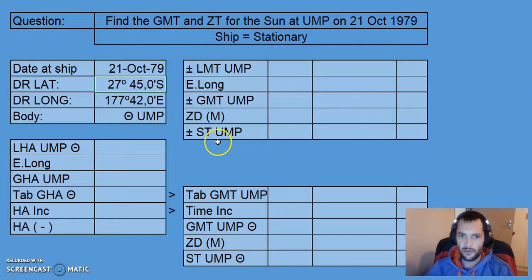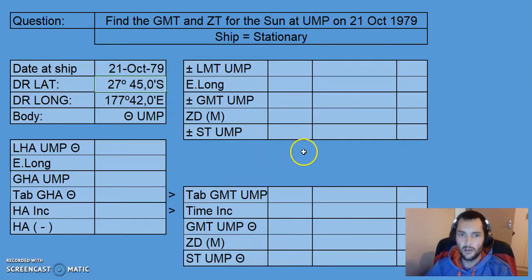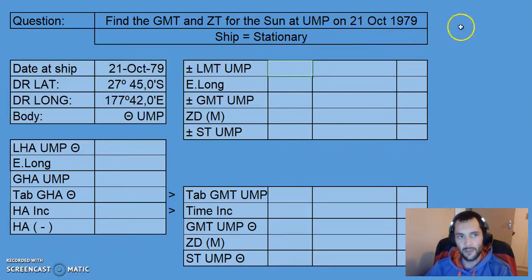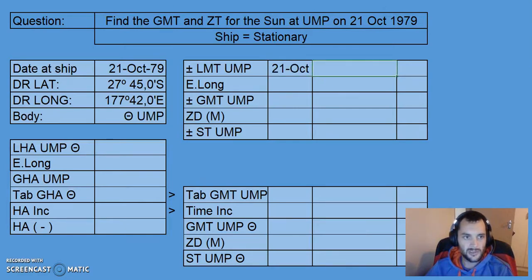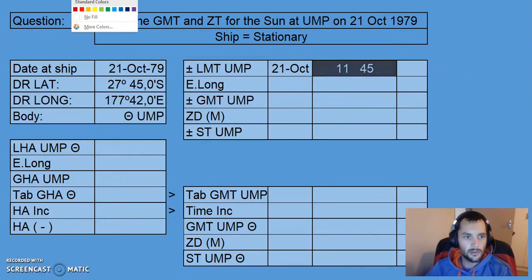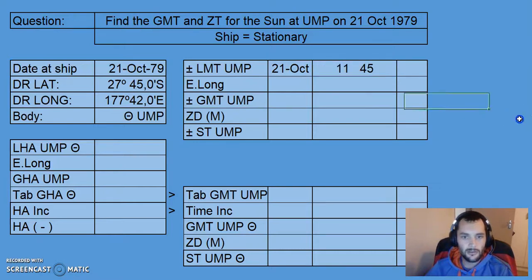We're going into the Almanac to find an approximate time that the Sun would be at Upper Meridian Passage for the local meridian. The time in the Almanac is always an LMT time, so we go into the Almanac on the 21st of October and check what time is given for Upper Meridian Passage for the Sun in LMT. We pick the time for the 21st of October, and the time we read from the Almanac is 11:45.